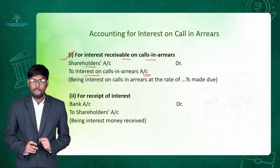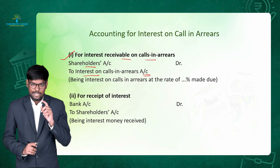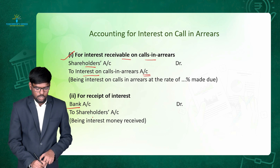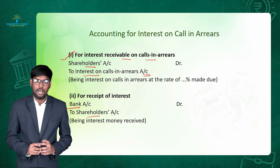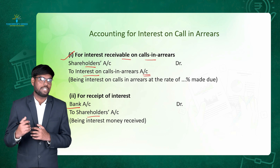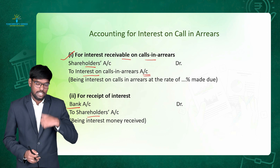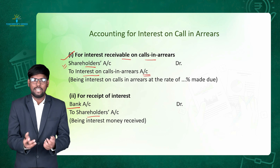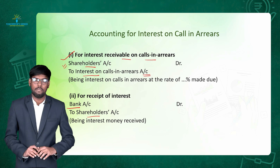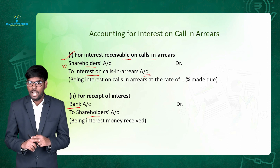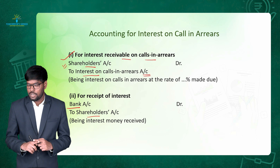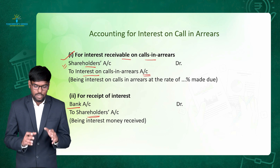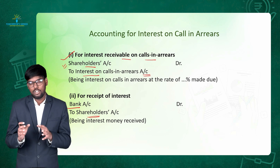After recording this, when we actually receive the interest amount, we pass the entry: Bank Account debit to Shareholders Account. We debit bank because we have received the amount, and we credit shareholders because the shareholder is the giver of the money. In the previous entry, we debited shareholders and created them as our debtor — now that we are receiving the amount from them, we credit and settle that account. These are the two entries we pass when recording interest on call in arrears.